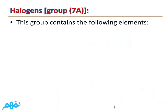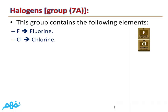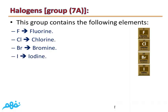This group contains the following elements: F - Fluorine, Cl - Chlorine, Br - Bromine, I - Iodine, and At - Astatine. We won't talk about Astatine because it is a radioactive element and it is unstable.